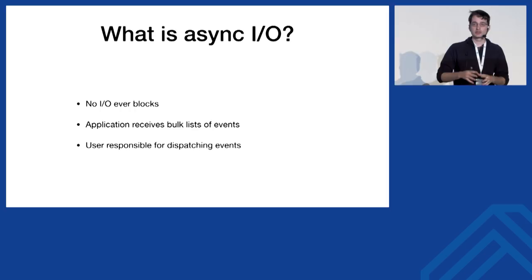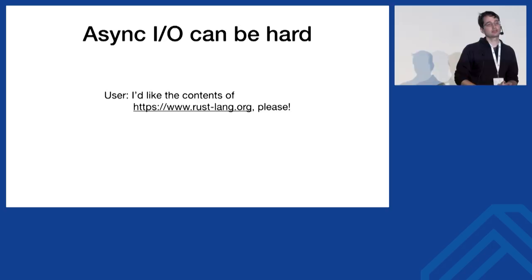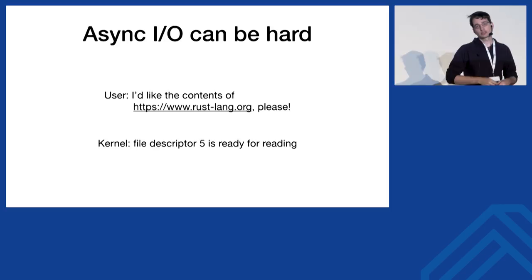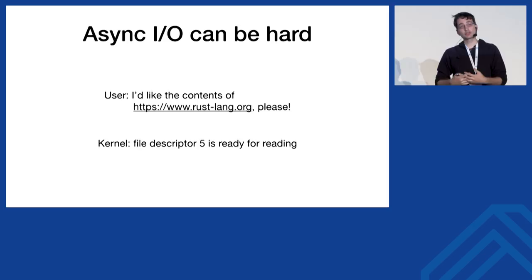For example, a high-level request to fetch the contents of the Rust lang homepage is actually quite involved — you're doing name resolution, possibly TLS with encryption, compression, and decoding HTTP. But all the kernel gives you is 'file descriptor five is ready.' Working with asynchronous I/O is very difficult and hard to compose. You might have one library that works and another that works, but you're not sure how to fit them together.